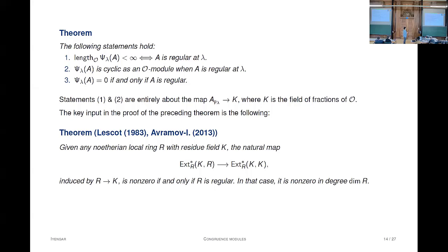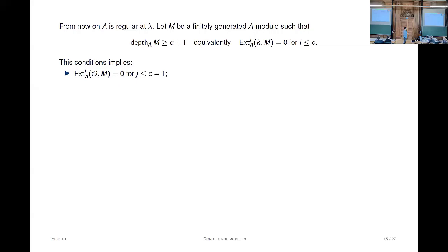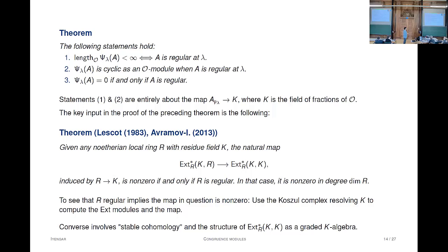The key input in the proof—this is one bit of commutative algebra you won't find in Bruns-Herzog—is the following result. For a Noetherian local ring R, you can look at the evaluation map from Ext_K(R) to Ext_K(K), induced by the map to the residue field. The key thing is that this map is non-zero if and only if R is regular. One direction, that when R is regular this map is non-zero, was already known to Serre and Auslander-Buchsbaum—you know the free resolution of the residue field, the Koszul complex, and you're computing cohomology in the top degree.